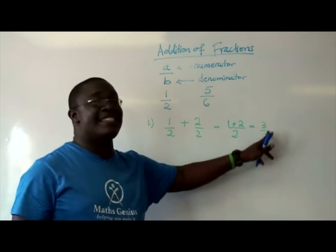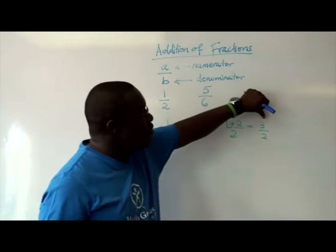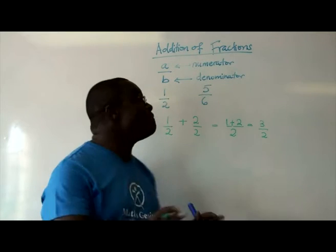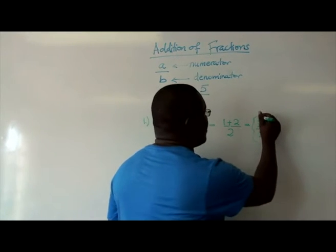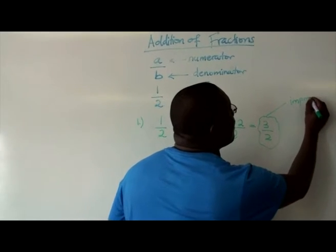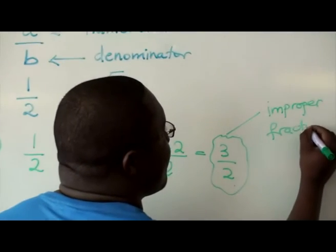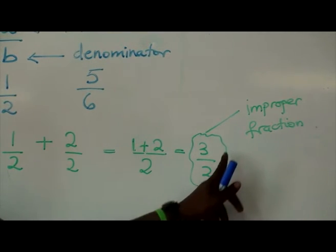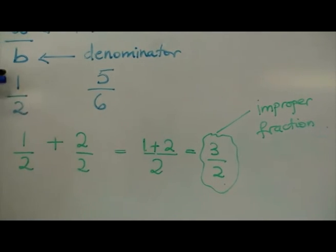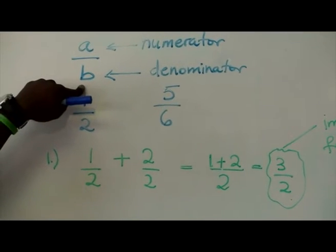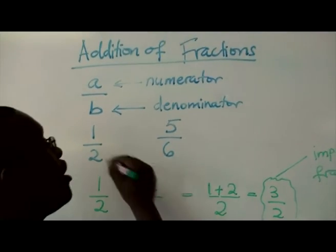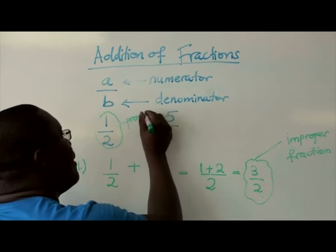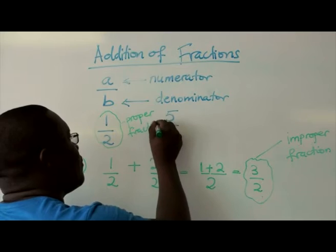In this case, it is written as an improper fraction. Because when the numerator is bigger than the denominator, then it's called an improper fraction. But if the numerator is smaller than the denominator, then it's called a proper fraction.